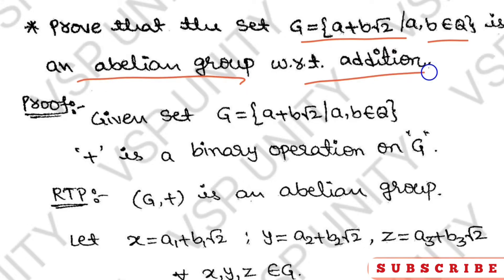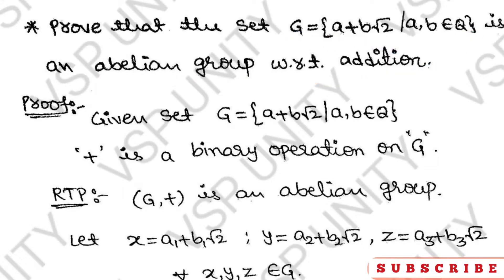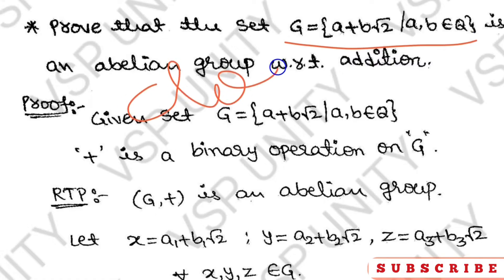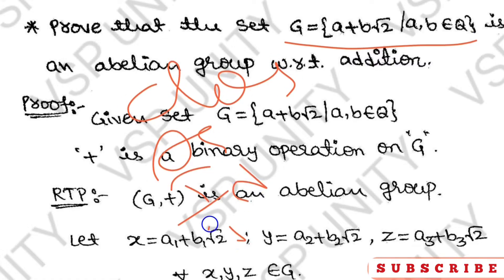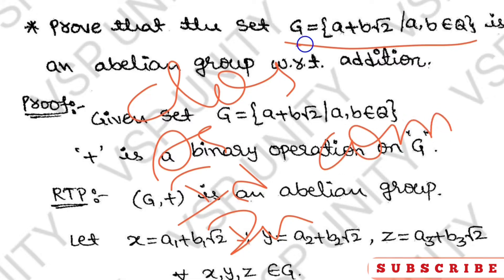Means, with respect to addition we have to show that the given set is an abelian group. We have to prove closure, associative, identity, inverse, and commutative properties — that this set G satisfies all of these.